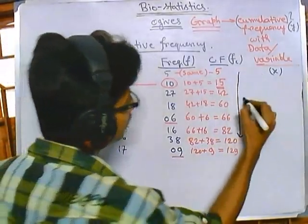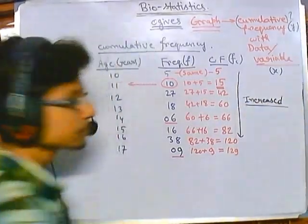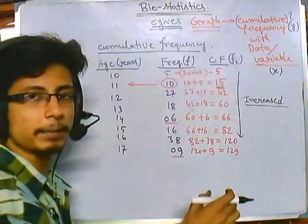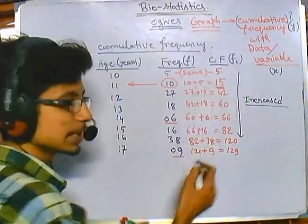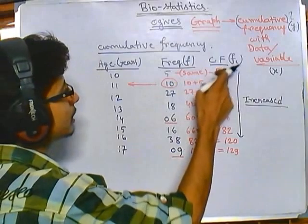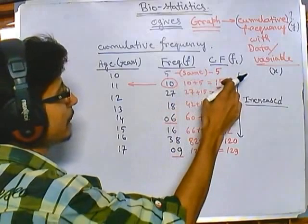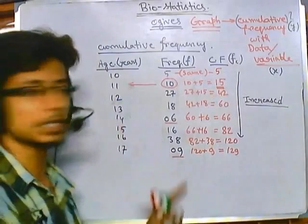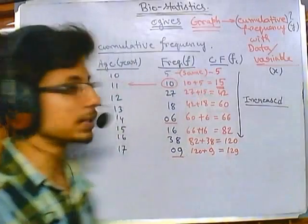This is the magic of cumulative frequency. The cumulative frequency can be of the addition type — where we add frequencies as we go down — or the deletion type. In the deletion type, we start from the total and subtract: for example, 10 minus 5 equals 5, then subtract again for the next value. What we computed here is the addition type.